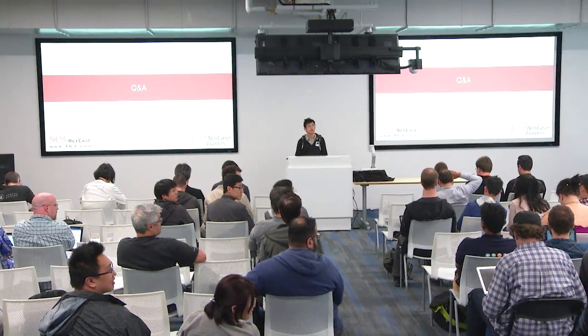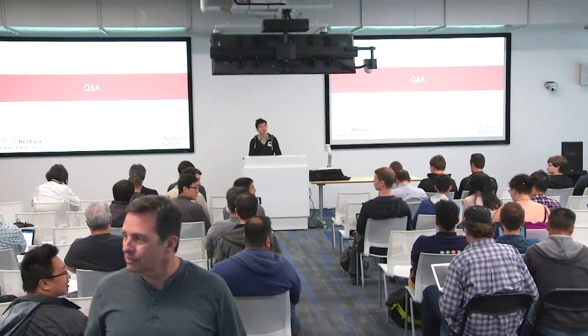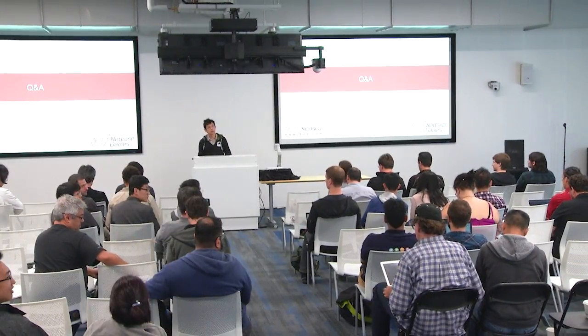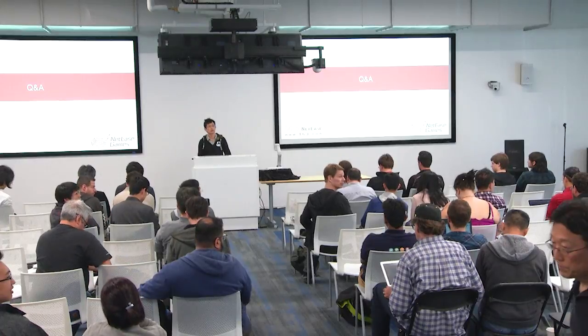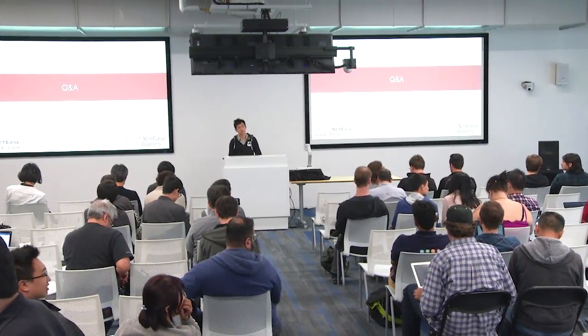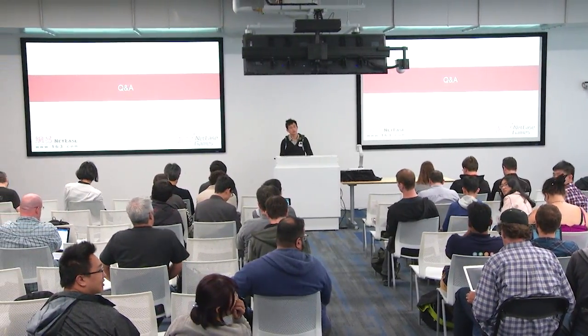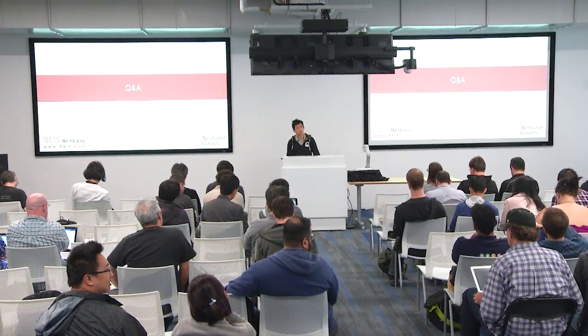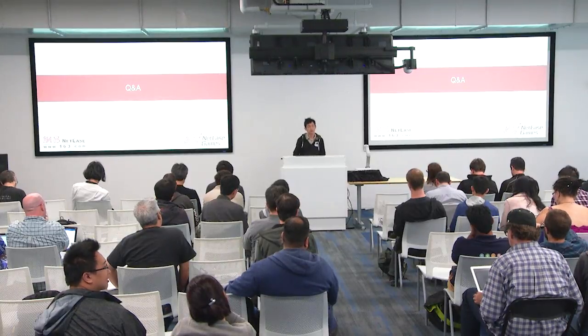Audience question: You mentioned you're using the accessibility service — did you have any issues with that when it was restricted recently? The accessibility service was restricted for apps using launchers or trying to access features like reverse color or tap to enlarge, because they were being taken advantage of. Have you seen any impact from that? Speaker response: For UI testing of native apps, we don't see any restriction. I think it can do what UI Automator or similar tools do.